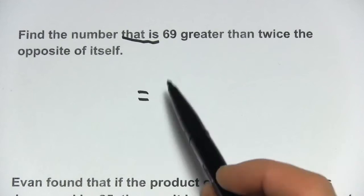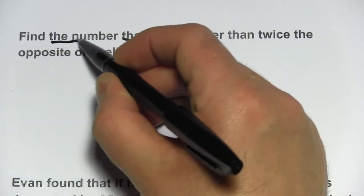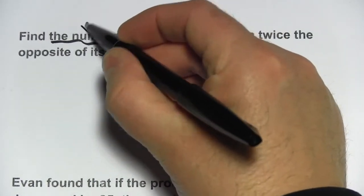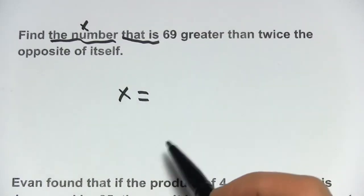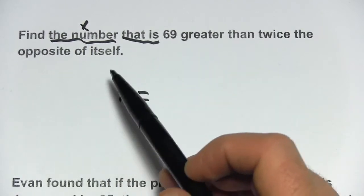And then let's look at what's on the left of that and on the right. On the left, it just says find the number. Well, the number, that is going to be our variable. I'm going to choose to call that x. So x equals this stuff, 69 greater than twice the opposite of itself.